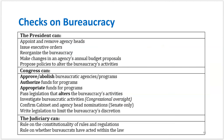The president has agency heads that serve at the president's discretion — the president can fire them at any time. The president can also issue an executive order to supersede whatever an agency is doing, and can reorganize different aspects within an agency. However, the president can't reorganize an agency itself, because that is Congress's job — Congress authorizes, approves, or abolishes different agencies and programs.